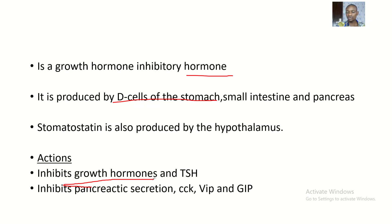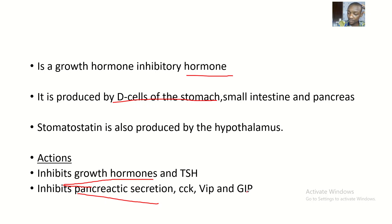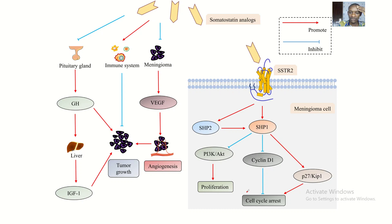It inhibits growth hormone and thyroid-stimulating hormone. Somatostatin also inhibits pancreatic secretion, inhibits cholecystokinin, VIP, and the GIP hormones. So basically, somatostatin is for inhibition.